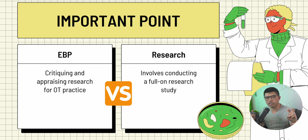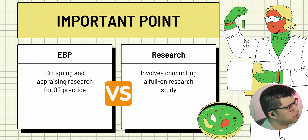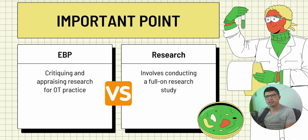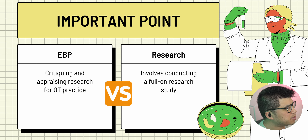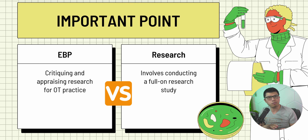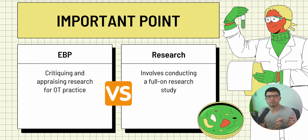How is evidence-based practice different from research itself? Both evidence-based practice and research have similar steps in the process, but it's the action — the actual doing — that differs. Both involve raising the question, identifying a problem, searching through the current literature, appraising the data, and then coming to a conclusion. One difference is that evidence-based practice can be thought of as more of an abbreviated approach to appraising and critiquing the research, whereas conducting a full research study is more involved and takes more time.